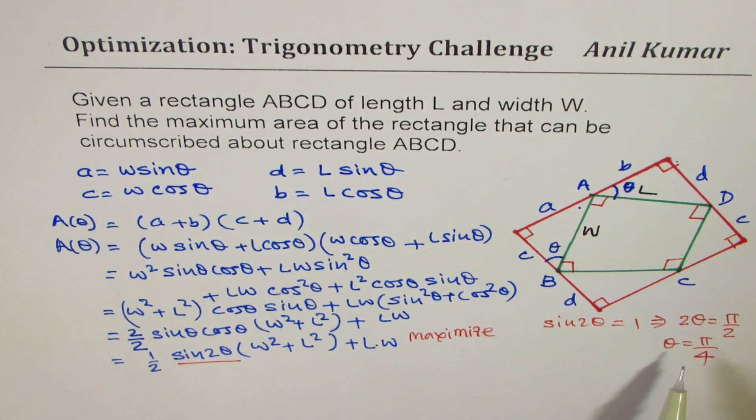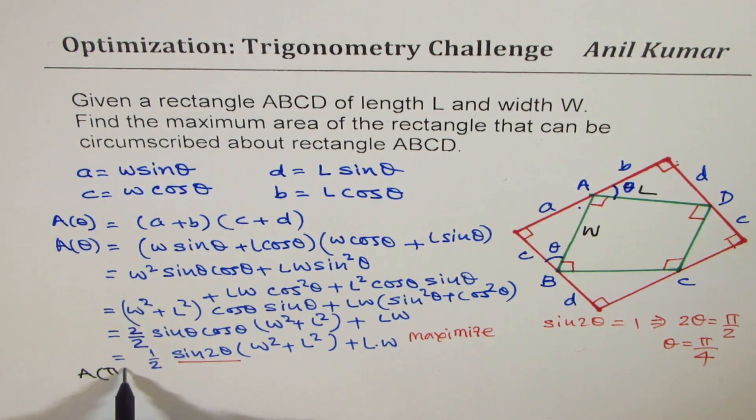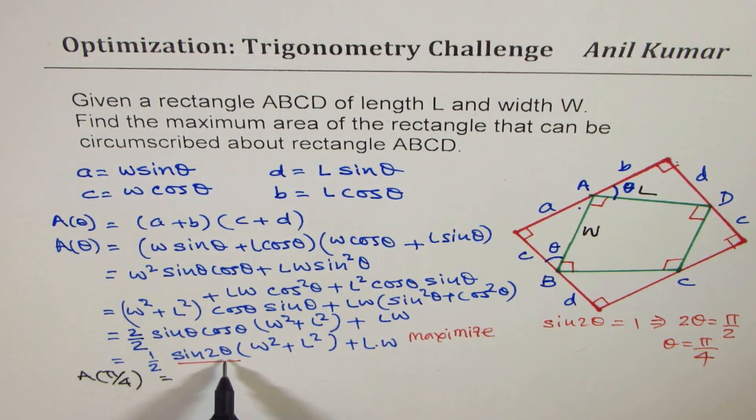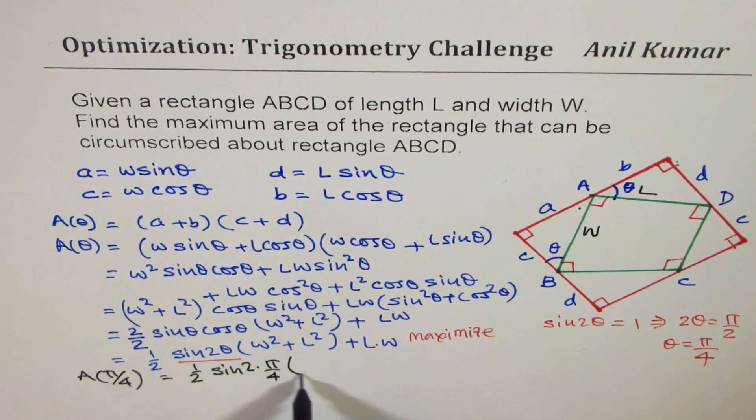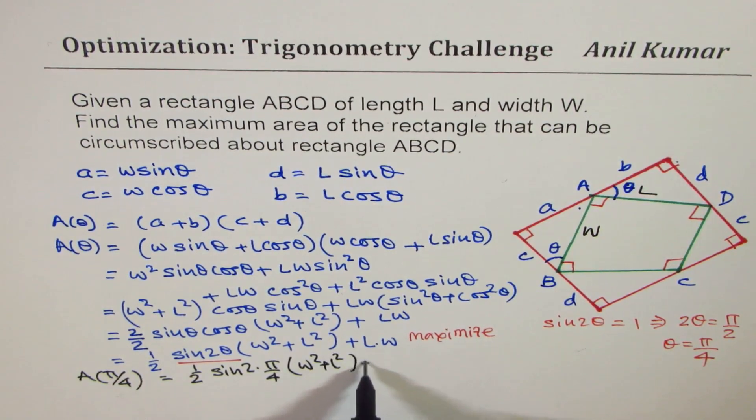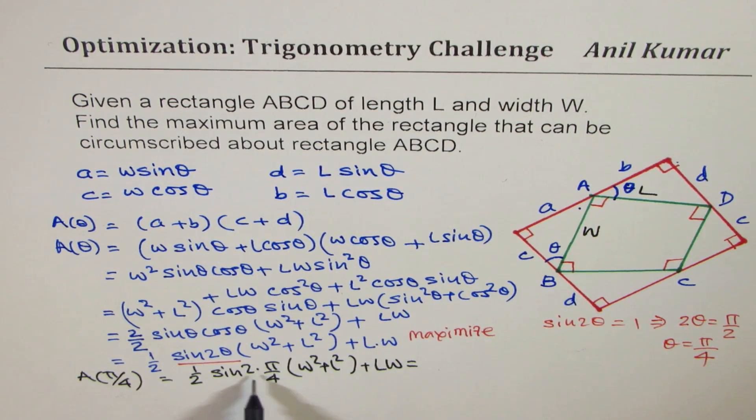So, even without using calculus, we can actually solve this question. So for theta equals to pi by 4, we get a maximum value here, right? So that gives you the maximum value. And therefore, we can write, for maximum area of circumscribing rectangle, the value should be A theta pi by 4. So if I substitute pi by 4 here, I got half sine 2 times pi by 4 times W square plus L square plus LW, right?